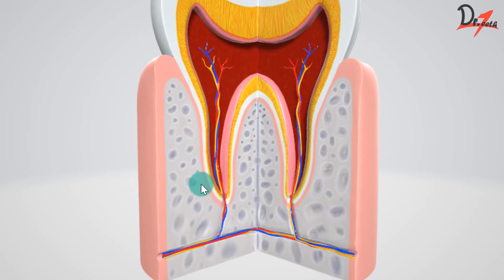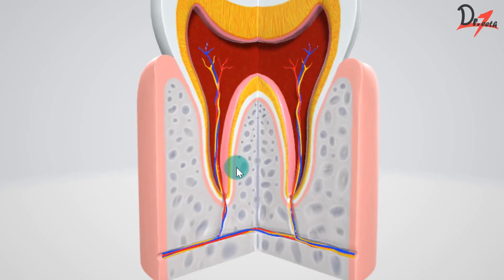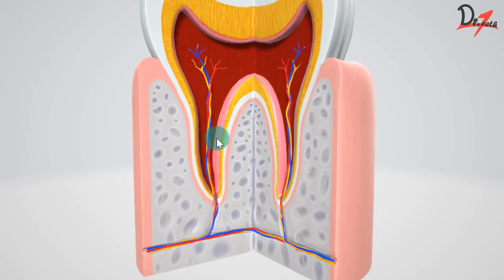We don't always have just one foramen — there could be accessory canals. These are mostly located in the apical third area. This canal is a communication between the inside and outside of the tooth, which is clinically significant because it is a means of spreading infection. These accessory canals form either due to loss of root sheath cells, preventing dentine formation and thus establishing a communication, or because a blood vessel was present during formation, preventing deposition at that site.